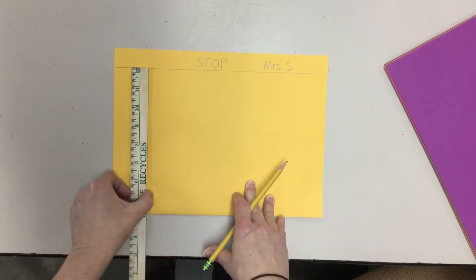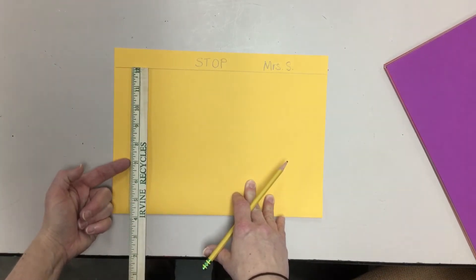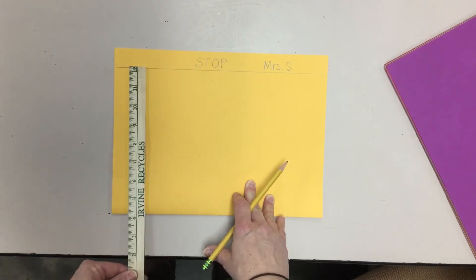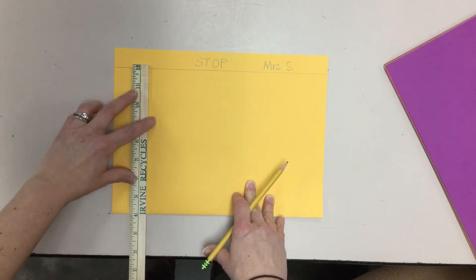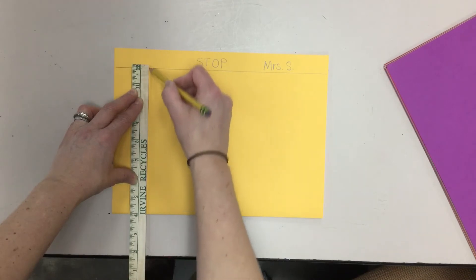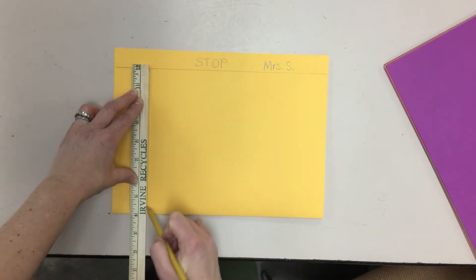Then I'm going to slide my ruler down and line it up. Here's my pencil line from before and I'm going to make another line vertically from this pencil line down to the fold line.